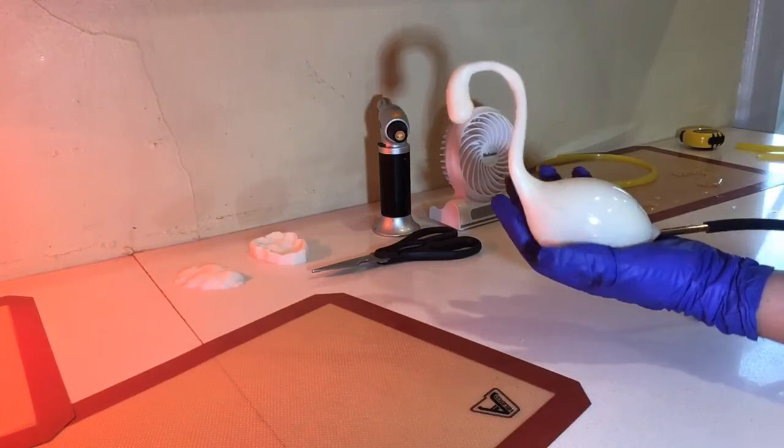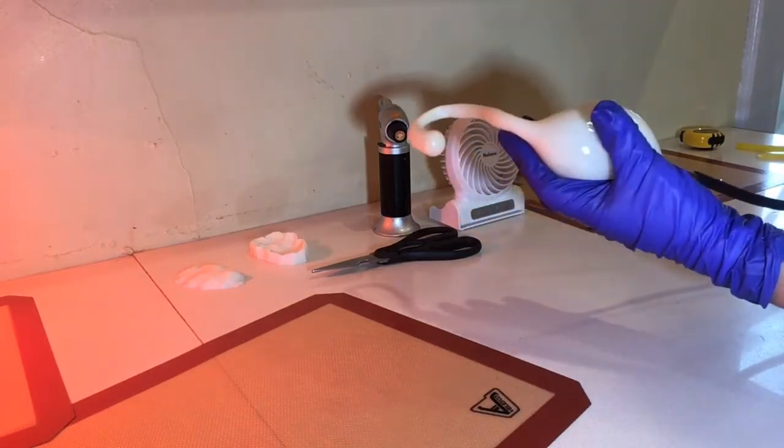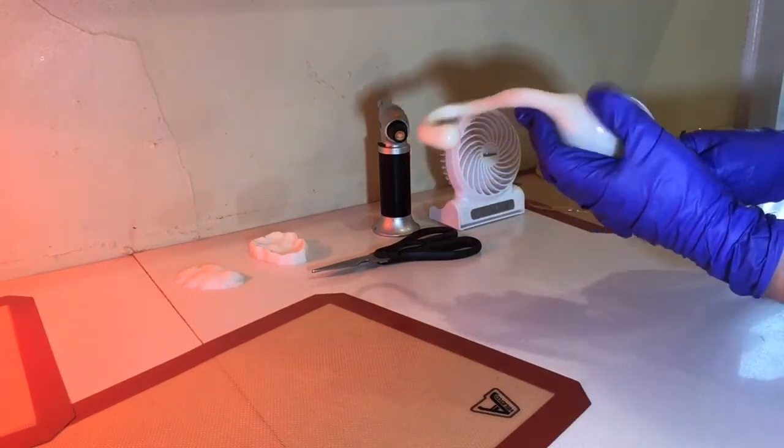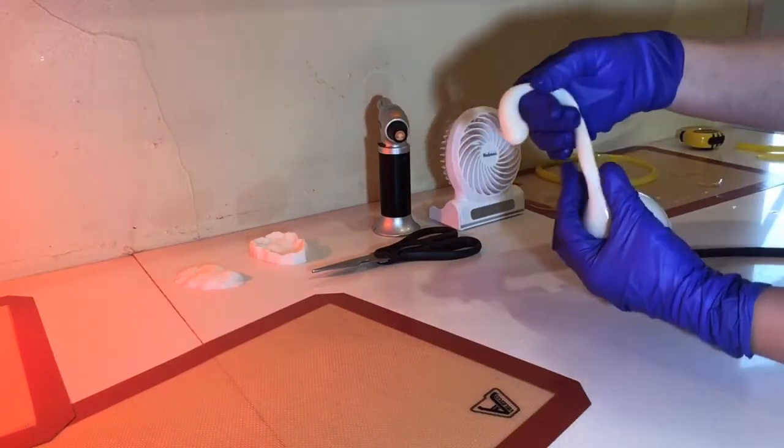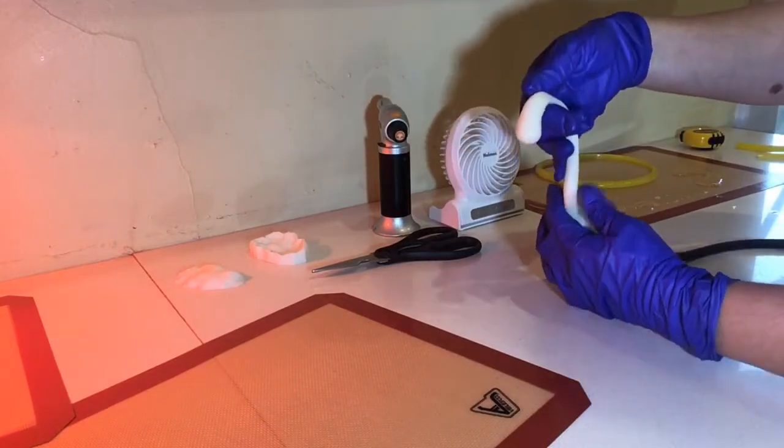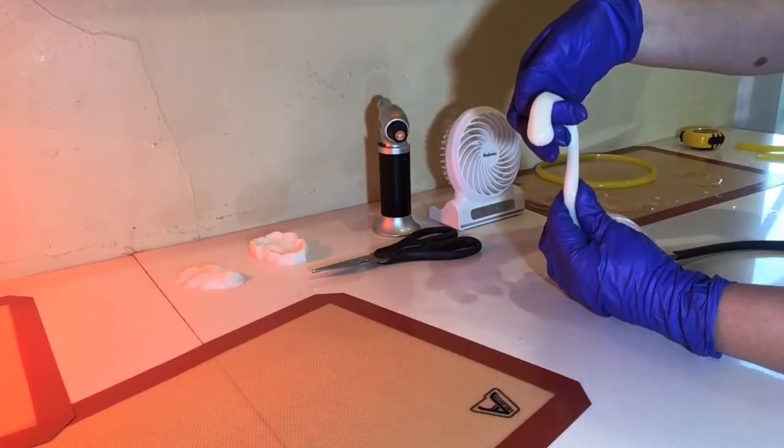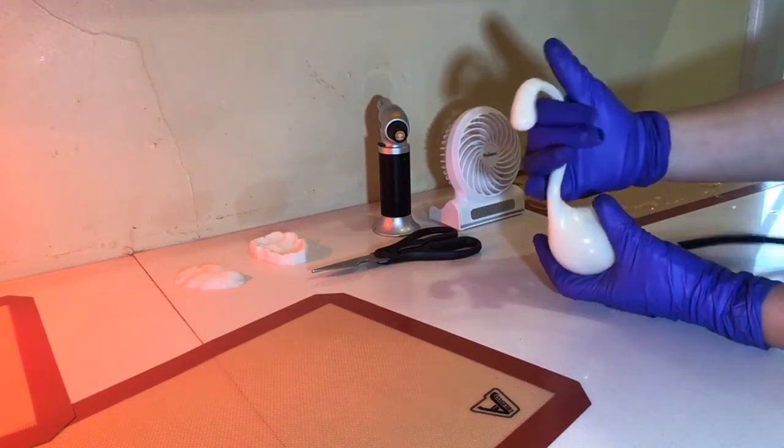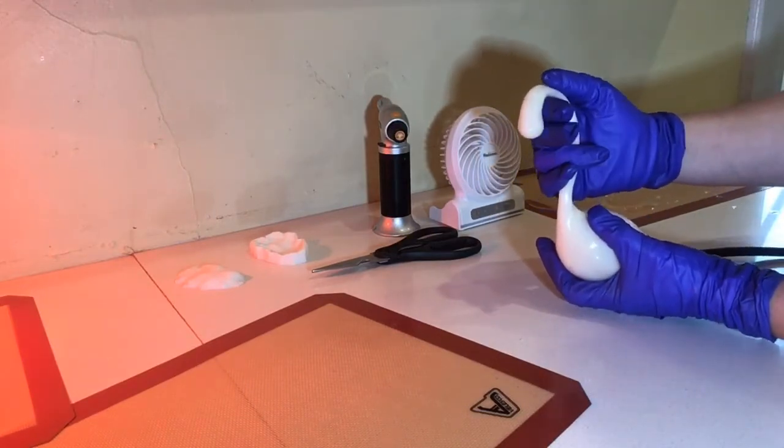Once it's completely cooled off that's when we'll set it aside and work on the wings. So still we got a little warmth here and it probably takes about 20 minutes for it to start to really harden. So right now it's just workable.